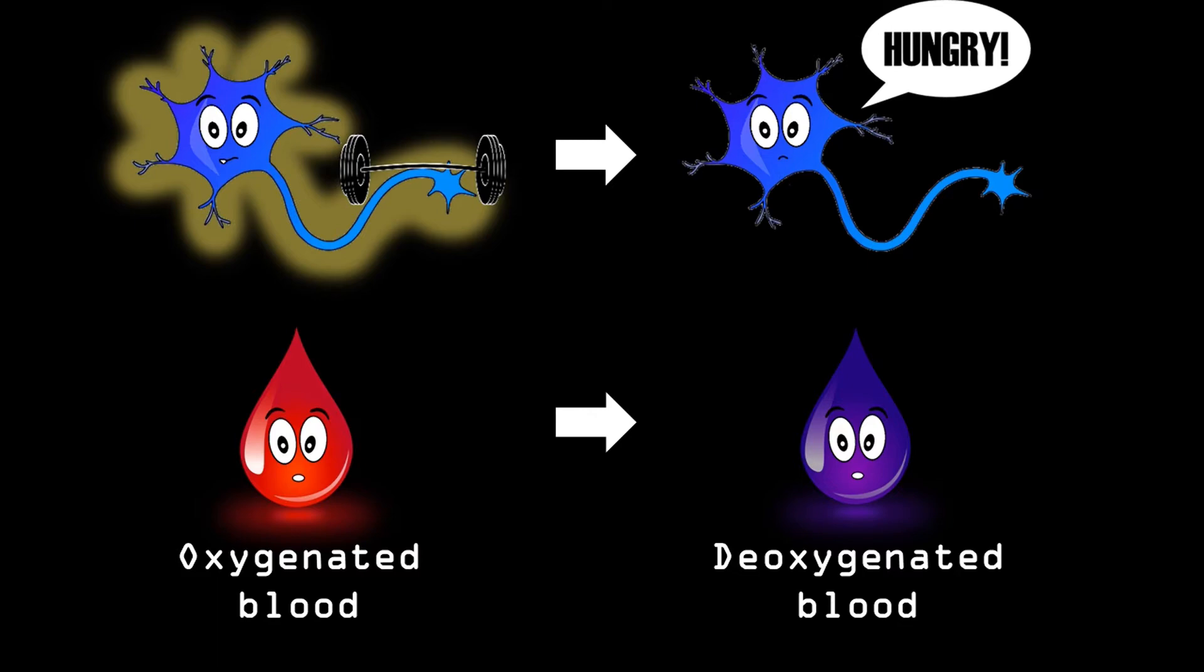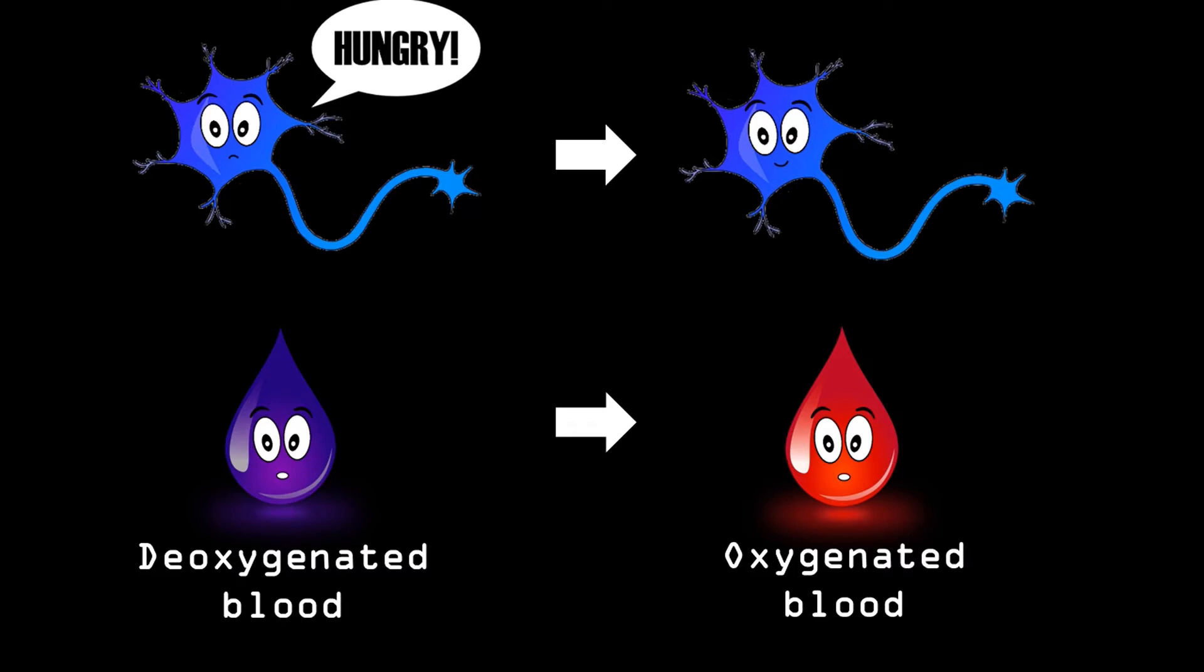Some seconds later, our brain replenishes those exhausted neurons with a bunch of new oxygen. In other words, oxygenated hemoglobin. Just to be sure, the brain receives more oxygen than it actually needs. Better safe than sorry.